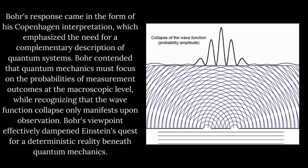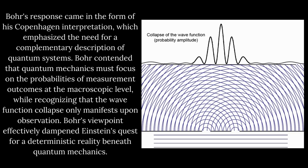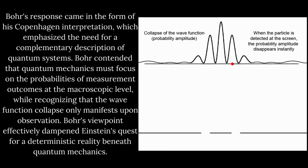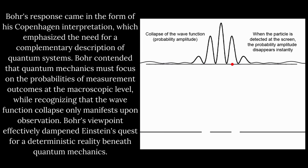Bohr's response came in the form of his Copenhagen interpretation, which emphasized the need for a complementary description of quantum systems.